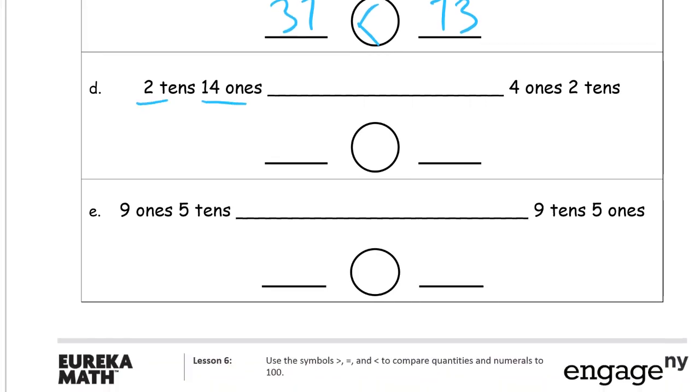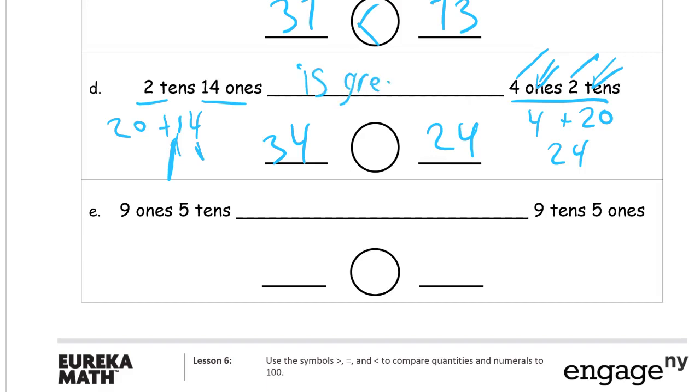2 tens 14 ones, well 2 tens is 20, and 14 ones is 14. So you have to think about 20 plus 14, well here's a 10. That makes it 30, and then 4 more, 34. And this looks like, well here it says 4 ones 2 tens, so be careful how you read that. That's 4 plus 2 tens is 20, so this is going to be 20. It looks like it would be 42, if you just look at it, because there's the 4 and there's the 2. But it's actually 4 and 20, so it's really 24. So 34 is greater than 24.